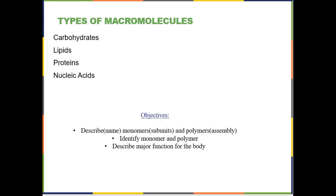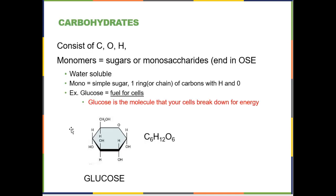We are going to have four different types of macromolecules: carbohydrates, lipids, proteins, and nucleic acids. For each one, you want to know what the monomers are — the small subunits — and what the polymers are, how the smaller subunits are put together to make the larger structures. You also want to be able to identify both the monomer and the polymer, and state the major function for the body for each type of macromolecule.